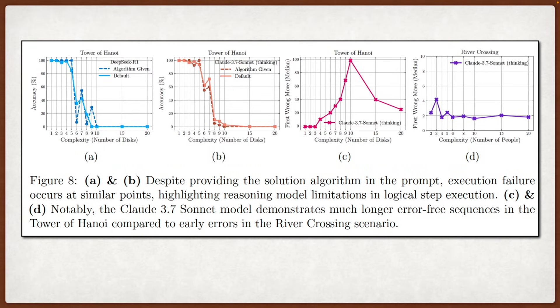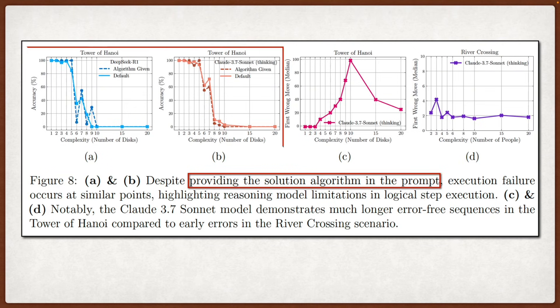One of the most surprising findings comes from their experiment where they literally give the model the complete algorithm for solving Tower of Hanoi. You'd think this would help since now the model just needs to execute the steps rather than discover the solution, but as shown in figure 8, the performance is basically identical with or without the algorithm. This really drives home that the limitation isn't about not knowing how to solve the problem, but about the fundamental inability to execute precise logical steps consistently, which is pretty concerning for systems that are supposed to be good at reasoning. The model seemed to struggle with maintaining state consistency across multiple steps and following algorithmic instructions even when explicitly provided.